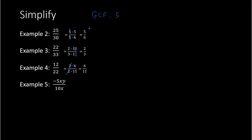Another example: we have negative 5xy over 10 times x. If I wanted to break the 10 apart, I could think of that as 2 times 5. The 5s would cancel, and the x's would also cancel out, so I have negative y over 2. The negative can go on top with the y, or better to write it on the side of the fraction like this: negative y over 2. We could have also just seen that 5 and 10 both have a 5 in common, so divide the 5 by 5 to get 1 and 10 by 5 to get 2, giving negative 1y over 2, with x canceled.